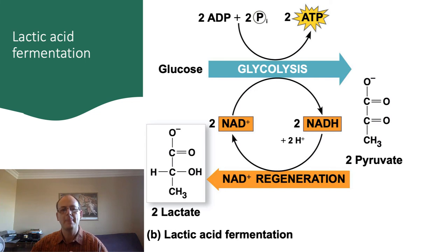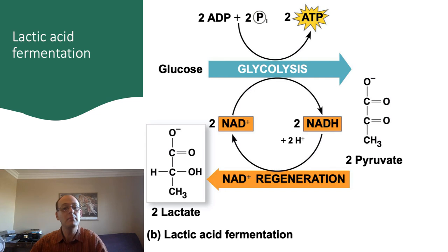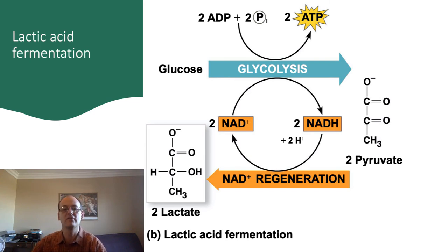Once a cell has access to oxygen again, the lactate can be reconverted back into pyruvate, and that pyruvate can proceed to the citric acid cycle and can be completely oxidized for energy. You'll hopefully notice that with fermentation alone, the amount of ATP that can be produced from a molecule of glucose is minuscule compared to what can be produced with aerobic respiration. Only two molecules of ATP are produced by glycolysis, compared to the 30 or so molecules produced by the combination of glycolysis and oxidative phosphorylation.